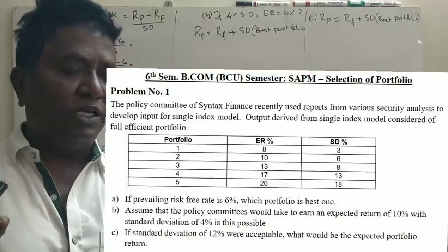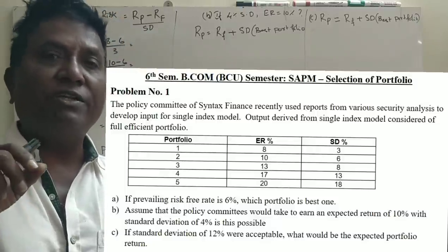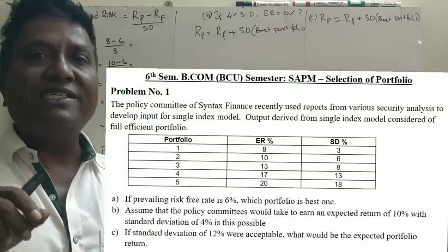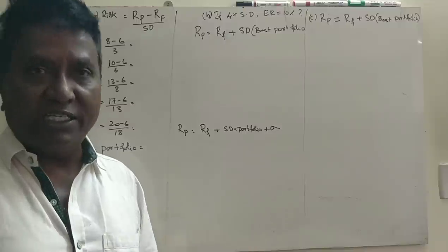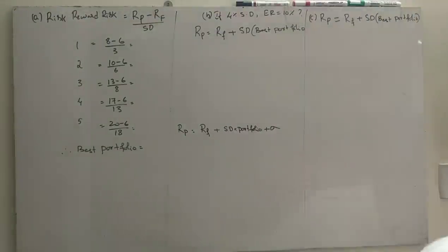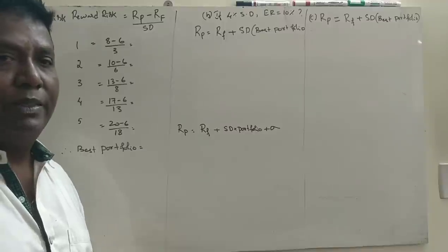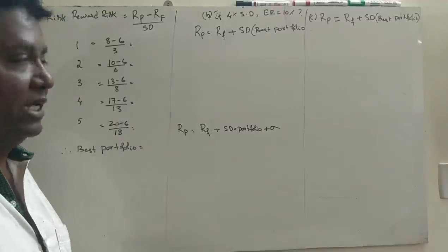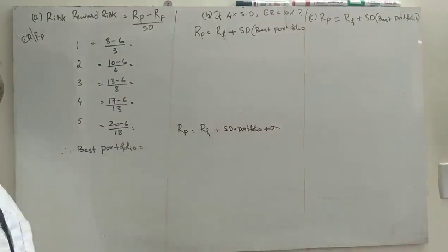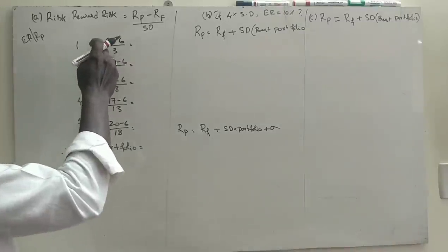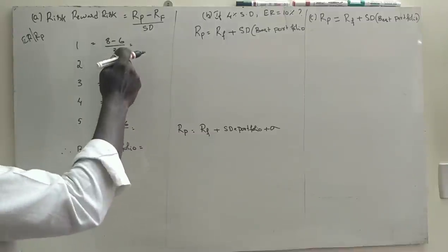Assuming that the policy committee would like to earn an expected return of 10%, with a standard deviation of 4% — is that possible? And is a standard deviation of 12% achievable for a given expected return? Now first, we have the expected return and return on portfolio. The expected returns are 8, 10, 13, 17, 20 and the risk-free return is 6.